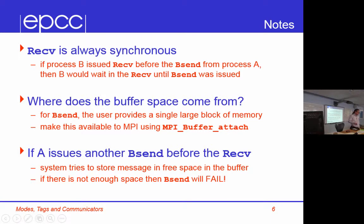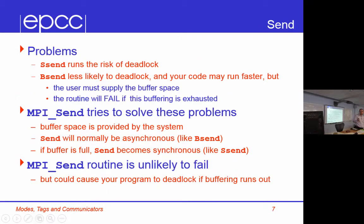Where does the buffer space come from for a buffered send? For BSend, the user provides a very large chunk of memory and MPI is then free to use that as buffer memory however it finds useful. If you run out of that memory, a buffered send will fail — there's no backup, no extra memory it can use. You can obviously store more than one buffered send in that space if there's enough space to do so.